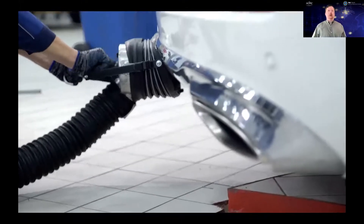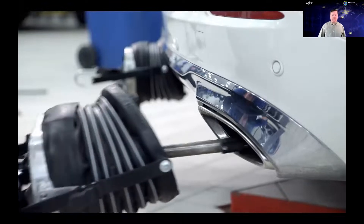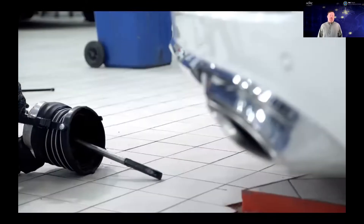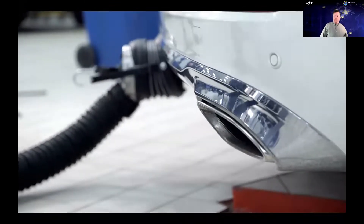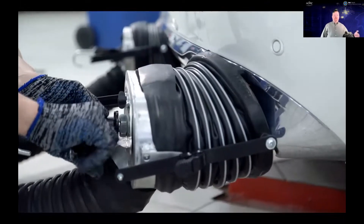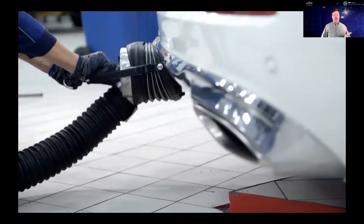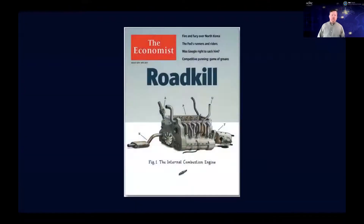Internal combustion engines are consistently demonized in the media, and a lot of people would say they're dead. A lot of this came from Dieselgate — the big scandal that broke in 2015, where the emissions measured in the lab were different from emissions on the road. This led to big fines, jail time, and a huge stain on the internal combustion engine — not only diesel engines but also gasoline engines. There was a lot of media backlash starting around 2017. One of the more famous sources was The Economist, whose cover called it 'Roadkill,' with the internal combustion engine shown dead on the side of the road.